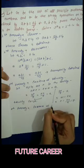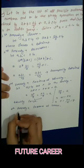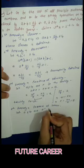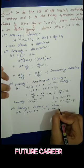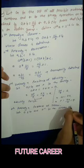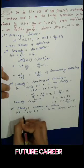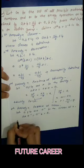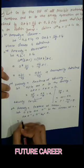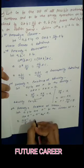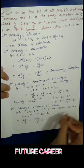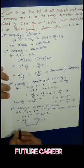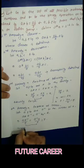Fourth property — Existence of Inverse: let a belong to G and a⁻¹ be the inverse of a. Then a★a⁻¹ = a⁻¹★a = e. Applying the star property: a·a⁻¹/7 = a⁻¹·a/7 = e = 7. Since LHS = RHS, the inverse exists.